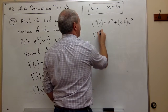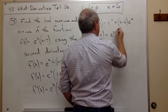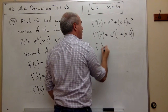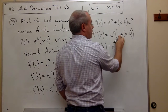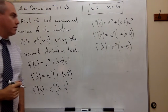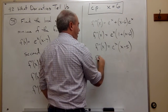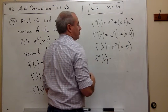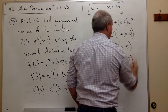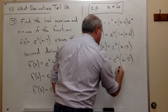Simplifying: f''(x) equals, if I factor out e^x, I get e^x times (1 plus x minus 6), which is e^x times (x minus 5). Now all I need to do is plug in 6. So f''(6) equals e^6 times (6 minus 5), which is 1. So f''(6) equals e^6.